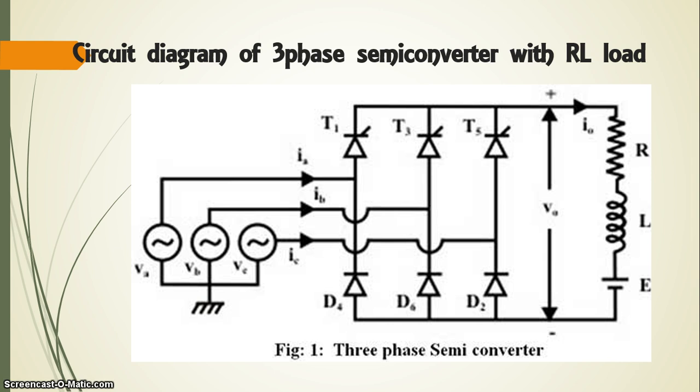When T2 conducts, the phase voltage VBN appears across the load until thyristor T3 is triggered. When thyristor T3 is triggered, T2 becomes reverse biased and hence T2 turns off. The phase voltage VCN appears across the load when T3 conducts.